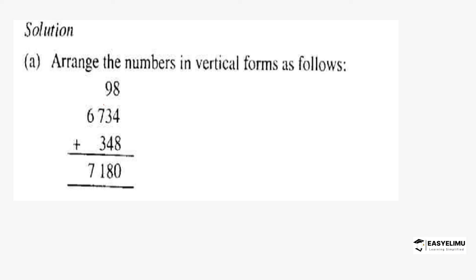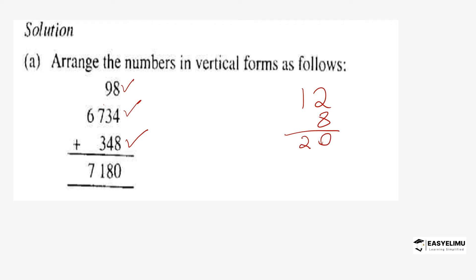After arranging, you start the process of addition — you sum up all the digits in each particular column. Starting with the 1's column: 8 plus 4 gives 12, then add 8 to give 20, so you write 0 and carry 2. Moving to the 10's column: bring the carried 2, add 9 to get 11, then add 3 to get 14, write 4 and carry 1. Actually, 2 plus 9 is 11, plus 3 gives 14 — write 4, carry 1.